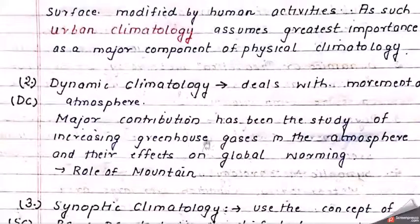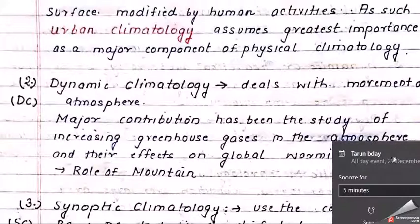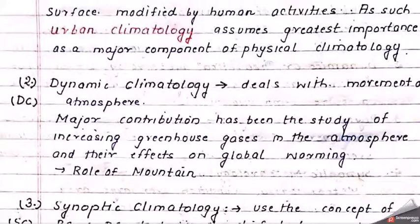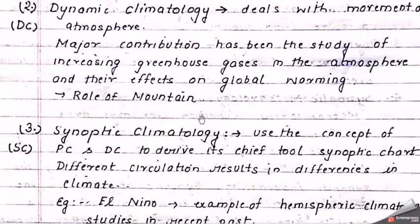Then we have dynamic climatology, which deals with the movements of the atmosphere. Major contributions include the study of increasing greenhouse gases — how they are distributed by air to various parts of the world like the north pole and south pole. It also studies the role of mountains as barriers that hinder the flow of air, causing rain or snowfall.